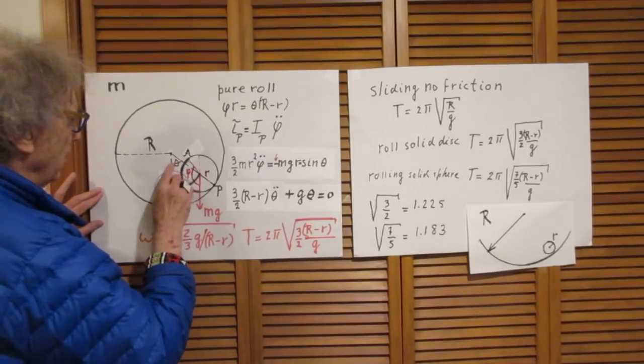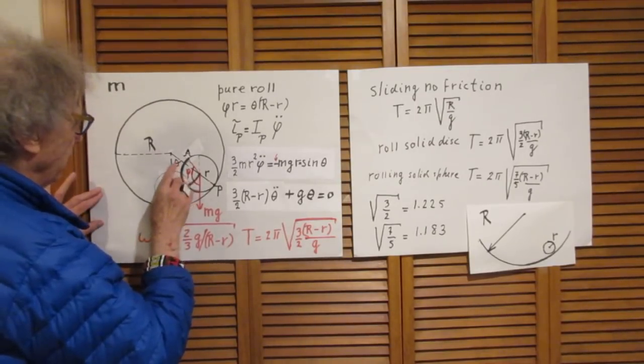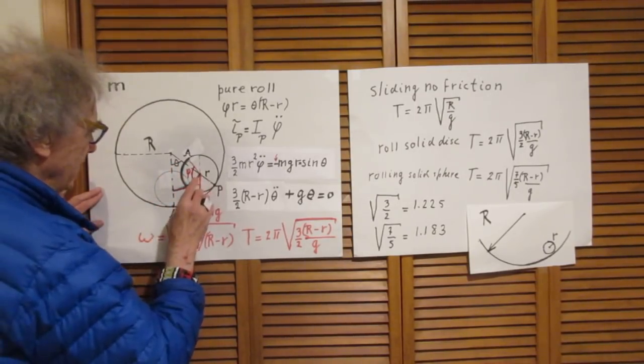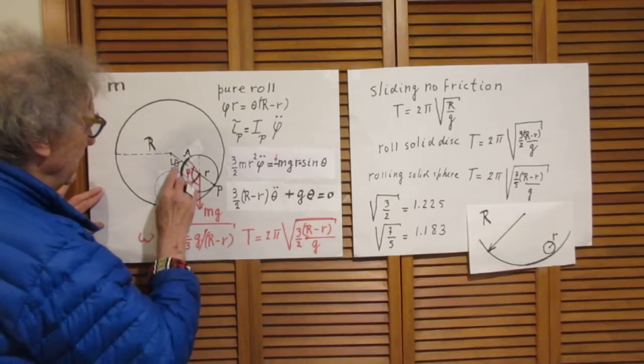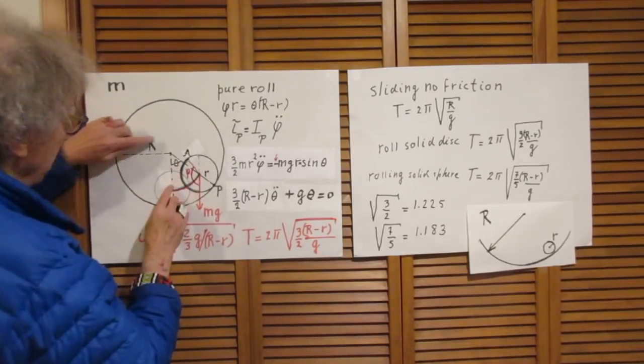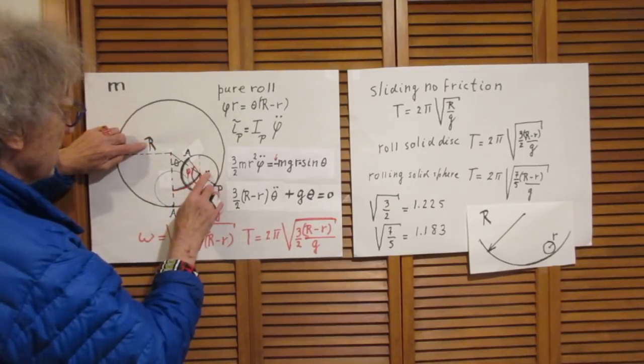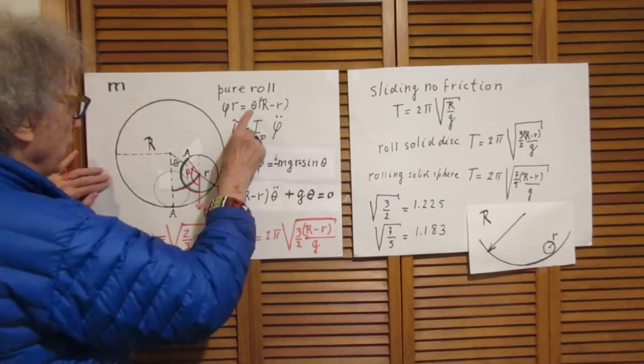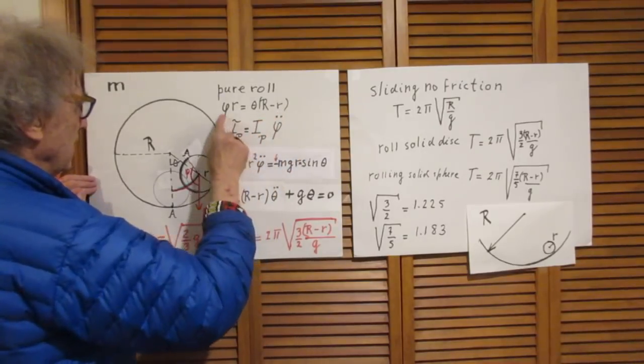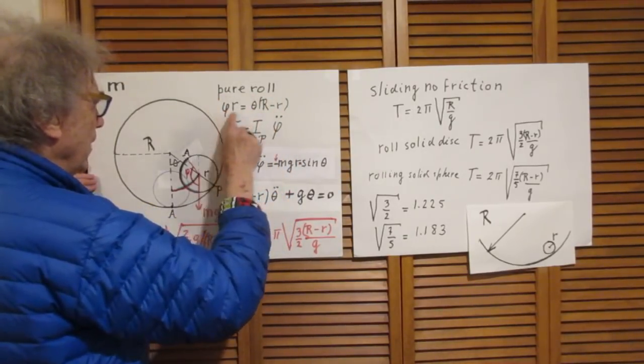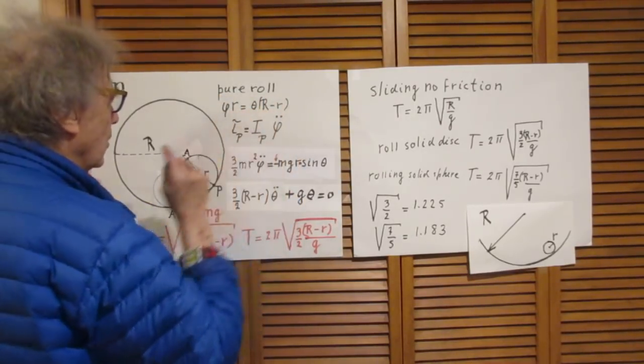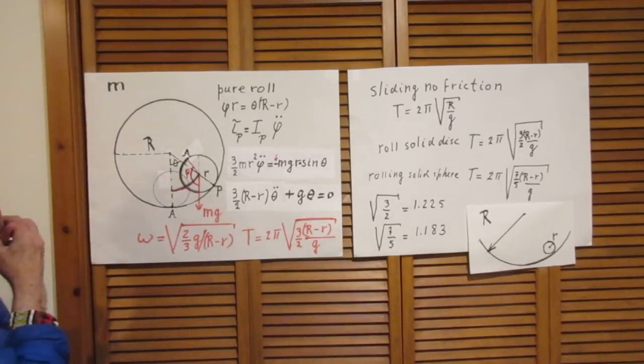That must be the same as the distance over which the center of mass has moved. If this angle is theta, then the length of this portion is obviously theta times capital R minus little r. This equation is key. This tells you that the object is in pure roll condition at all moments in time.